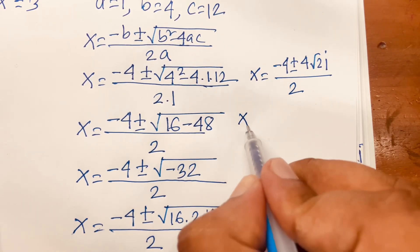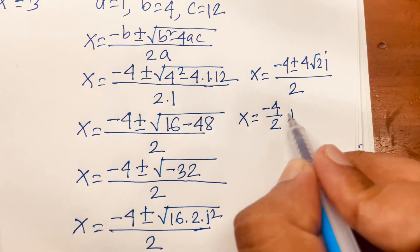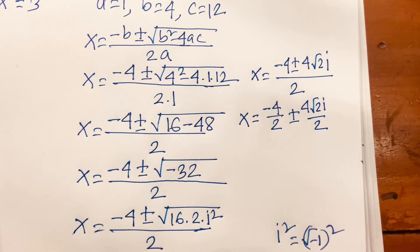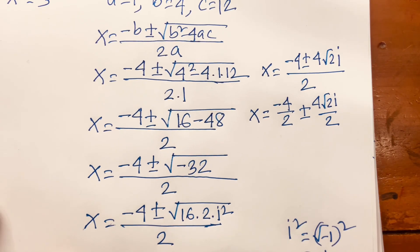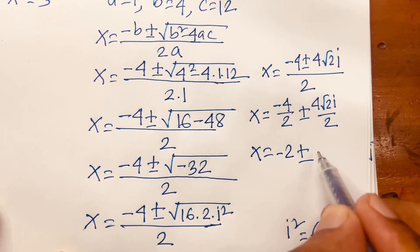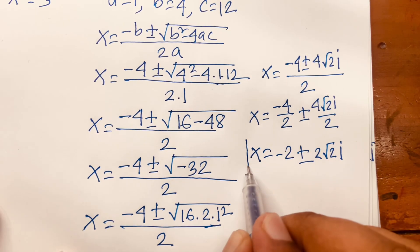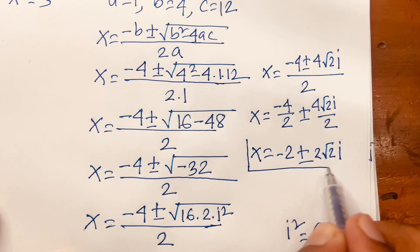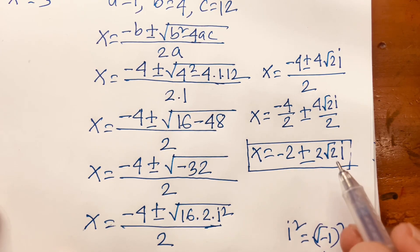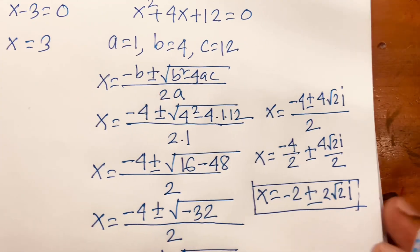Then x equals minus 4 over 2 plus or minus 4√2·i over 2, which simplifies to x equals minus 2 plus or minus 2√2·i. So the two complex solutions are x equals minus 2 plus 2√2·i and x equals minus 2 minus 2√2·i. These are imaginary numbers.